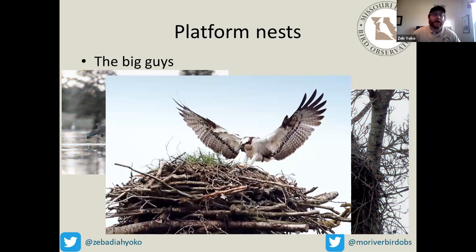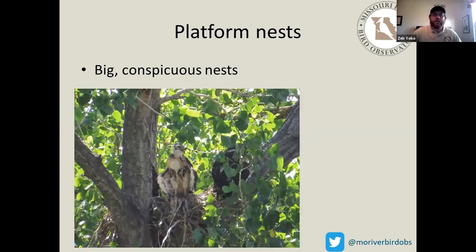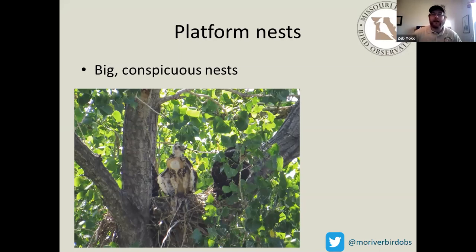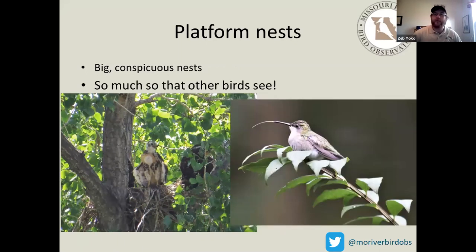Perhaps the most iconic platform nester is the osprey — they often nest on a platform or post rather than in trees, especially around lakes, large rivers, and coastal areas. These big conspicuous nests are visible, especially with a large bird inside. Because these nests are so visible, other birds can see them too, including the ruby-throated hummingbird.